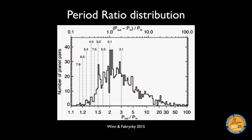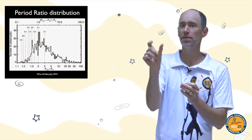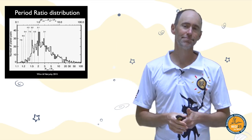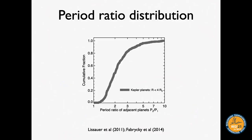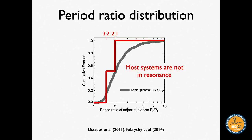This leads us to the period ratio distribution. What this distribution shows is: take all systems of super-Earths where there's more than one planet, take the ratio of orbital periods of every pair of neighboring planets, and that gives you this distribution. A more informative way to look at it is as a cumulative distribution, showing a smooth curve going from one to about three.